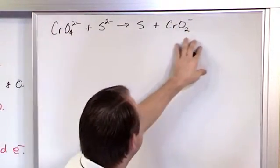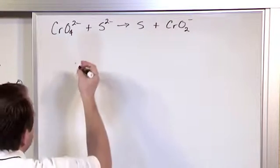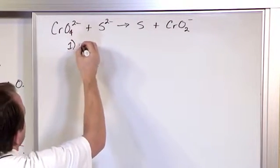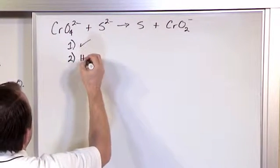It is net ionic already because you can see the ions everywhere. All of the spectator ions have already been cancelled. So step one, we're going to check mark because that's already a net ionic equation. Step two is the half reactions.